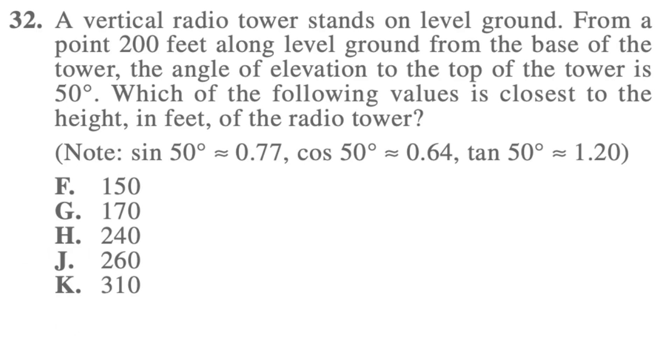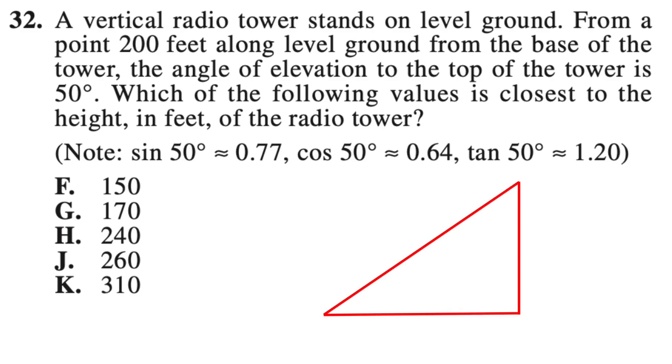Alright, let's cover a bit of trig now. So let's look at this next problem. A vertical radio tower stands on ground level from a point 200 feet along ground level from the base of the tower. The angle of elevation to the top of the tower is 50 degrees. Which of the following values is closest to the height in feet of the radio tower. So another big tip I have is to sketch out diagrams of problems. So if we sketch out this triangle, you can see that the adjacent side is 200 feet. And we're trying to find the opposite side, which is the height.